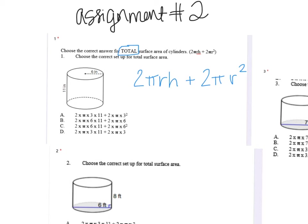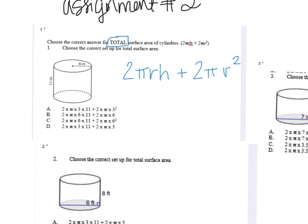You still just have to find the radius and the height — that's really all you need. On number one, look at your circular base to find the radius. They drew a line halfway across the circle, which is perfect — that's my radius, I don't have to divide. The height is just how tall it is. So plugging into the formula: two times pi times the radius times the height of 11, plus two times pi times six squared.